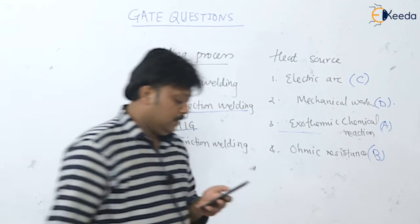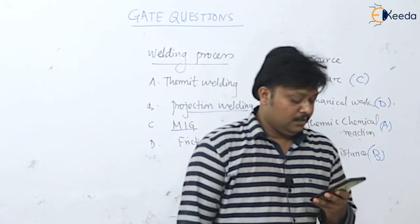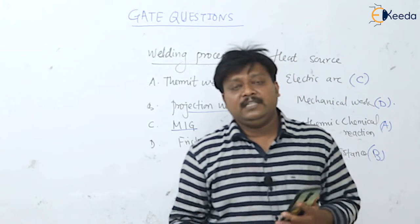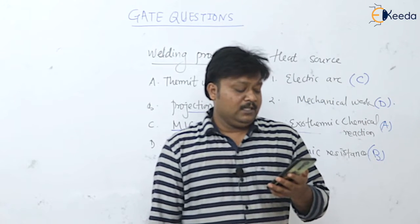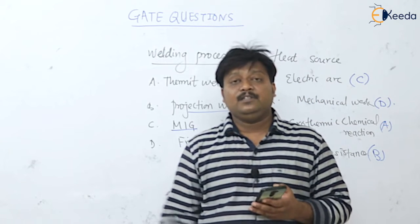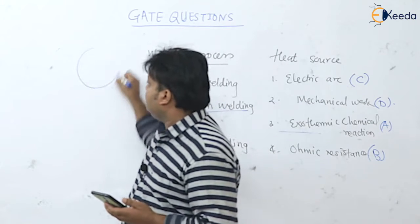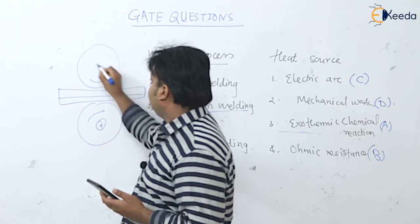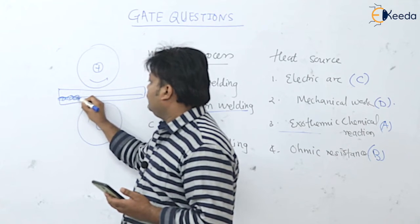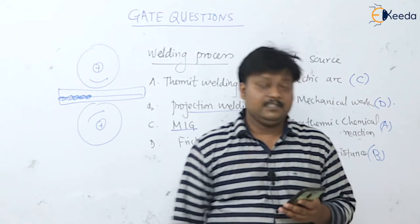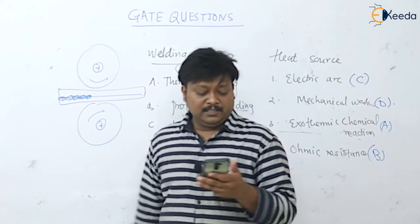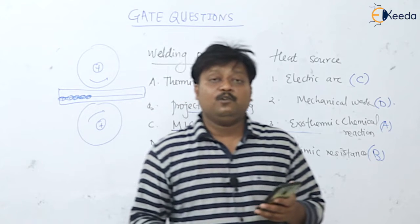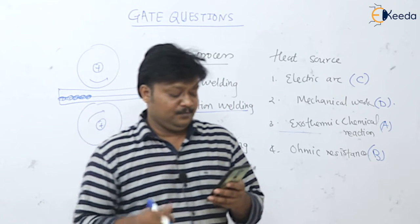Next: in resistance seam welding, the electrode is in the form of — options: cylindrical, flat plate, coil of wire, circular disc. In spot welding we use straight cylindrical electrodes. Seam welding is continuous spot welding, where thick copper electrodes in the form of circular discs are used. The correct answer is circular disc.